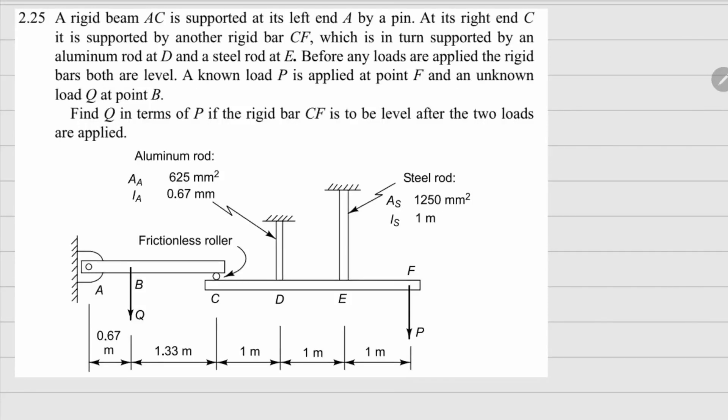This one is 2.25. Here we have a bar AC which is pinned at point A. On the right side it is in contact with another bar CF, which is rigid, through this frictionless roller. The CF is connected to two rods, one made with aluminum and the other with steel. At the beginning, in this whole assembly, both AC and CF were horizontal, both of them are level.